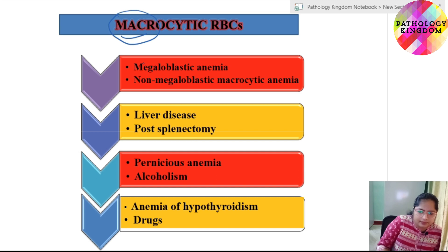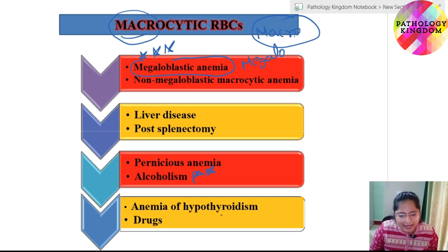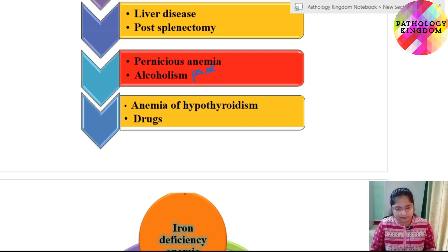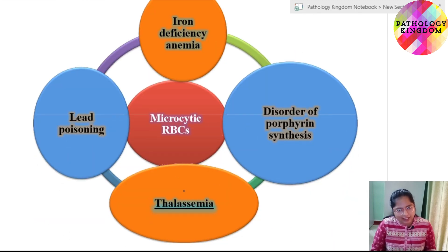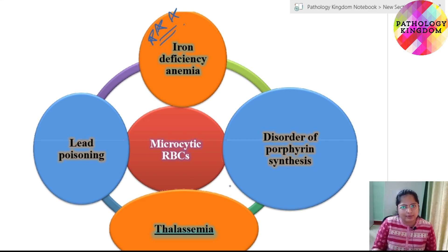Macrocytic means big red blood cells. The most common example of macrocytic RBCs is megaloblastic anemia, as 'megalo' means big. Microcytic RBCs — the most common example is iron deficiency anemia, followed by disorders of porphyrin synthesis, thalassemia, and lead poisoning.